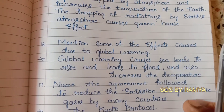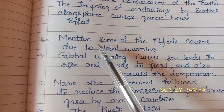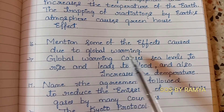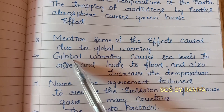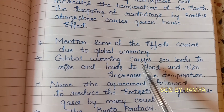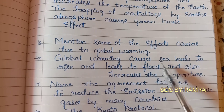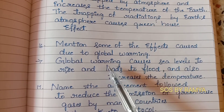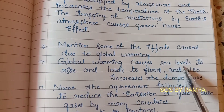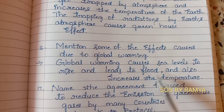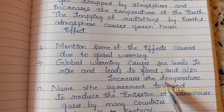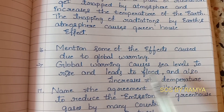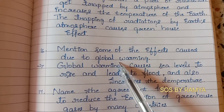Question 16: Mention some of the effects caused due to global warming. Global warming causes sea level to rise, and also leads to floods, and also increases the temperature. So temperature increase, floods, and sea level rise are all effects caused because of global warming.